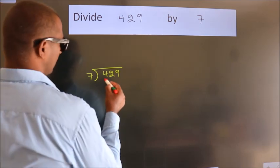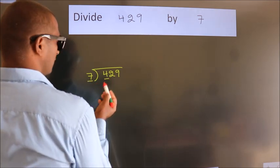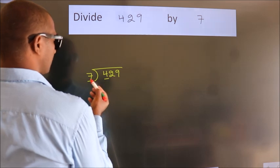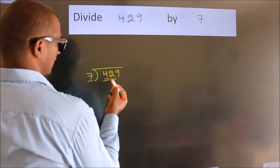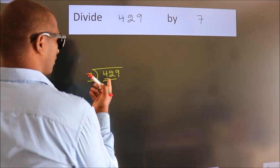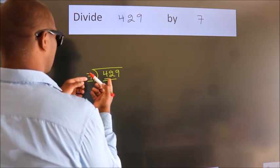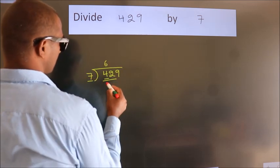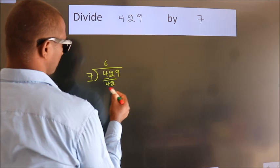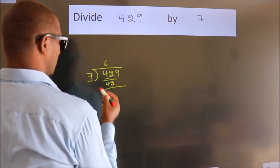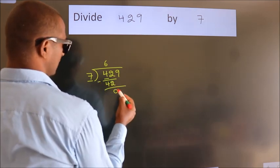Here we have 4, here 7. 4 smaller than 7. So we should take 2 numbers, 42. When do we get 42? In 7 table, 7 times 6 is 42. Now we should subtract, we get 0.